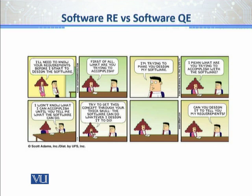Now the project manager gets frustrated and says: 'The software can do whatever I design it to do.' Look at the second-to-last diagram — both are completely lost. Both have to understand what the other wants. Then look at the last panel: the client says, 'Can you design it to tell me my requirements?'